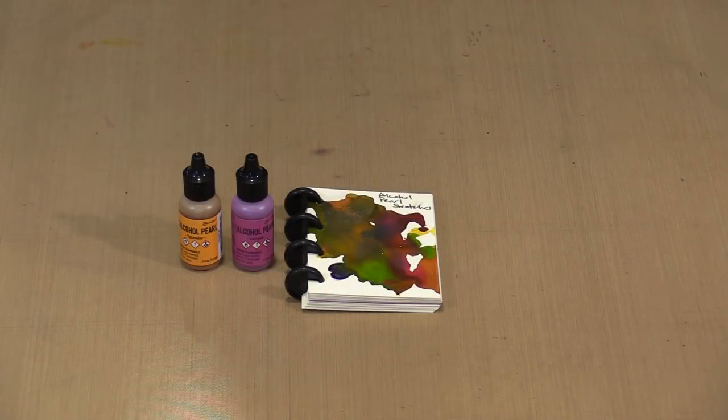When I was at Creativation and watched Tim demo with and speak about the alcohol pearls, I noticed the color swatches he was holding. Each is a rectangle of Yupo with a hole punched on one end and they were fastened together with a book ring. The swatches were simply a puddle of each color, but together as a whole they make a great reference.